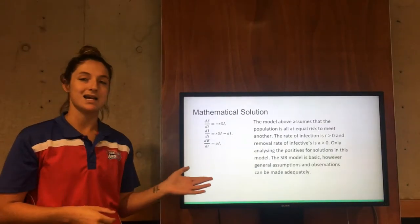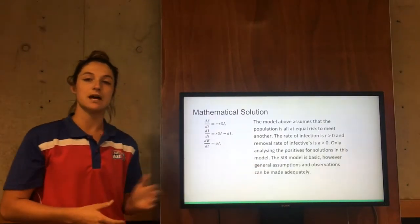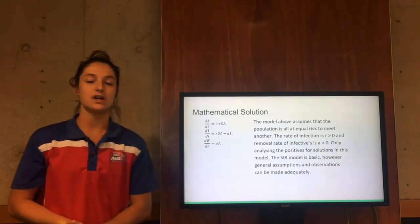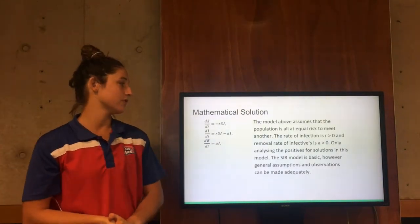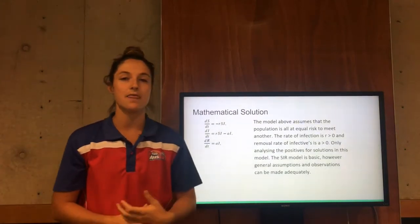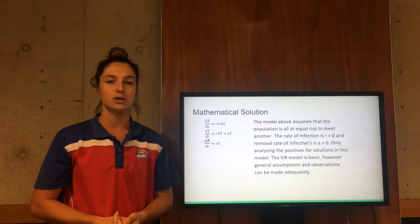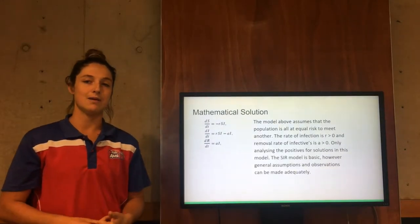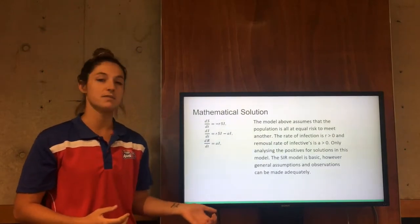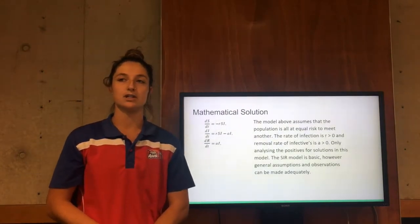This model here derived from the SIR model above assumes that the population is all at equal risk to meet one another. The rate of infection R is greater than zero and the removal rate of the infected A is greater than zero, only analyzing the positive solutions in this model. The SIR model is a basic model however general assumptions and observations can be made adequately from this. I will now hand you over to Ricky.